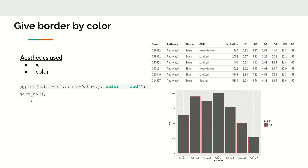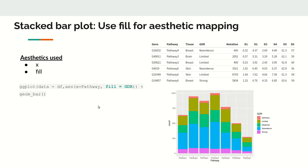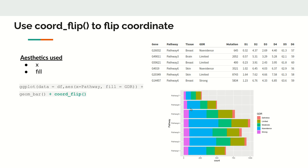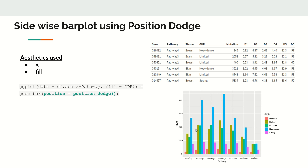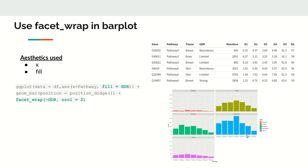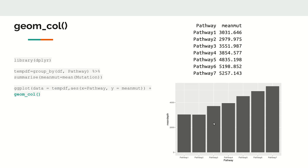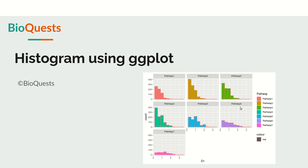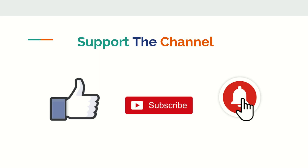In summary, we used geom_bar to draw bar plots, saw stacked bar plots, coordinate flip, horizontal dodging for side-by-side bar plots, facet wrapping, and then geom_col for actual values rather than counts. That is all about bar plots. In the next video we will see histograms — thanks for watching!